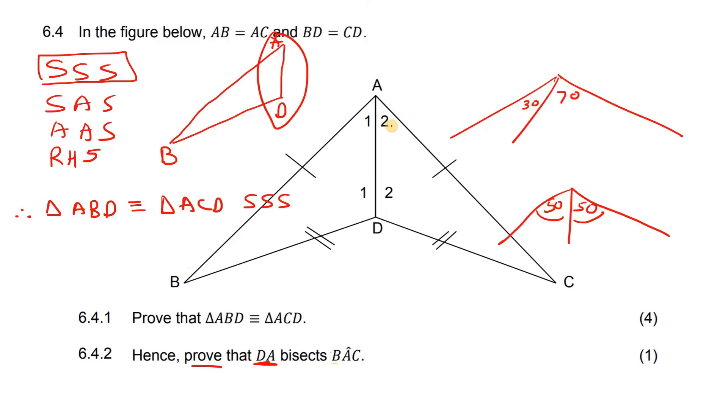Now, why would they be the same? Well, think about this. We've just proved that this triangle is exactly the same as this triangle. So, that means that these two parts have to be the same.